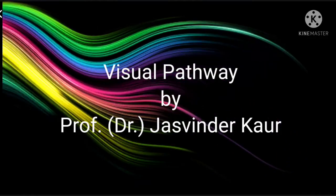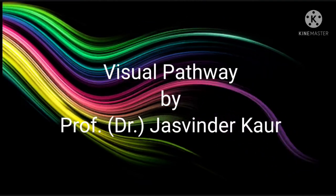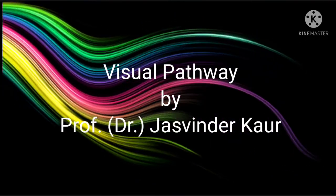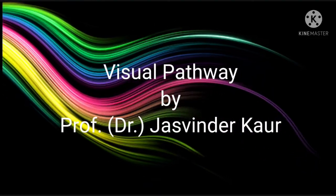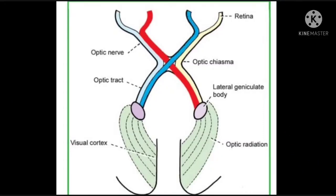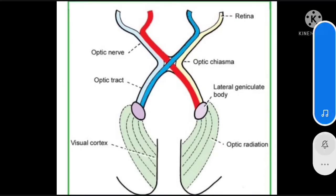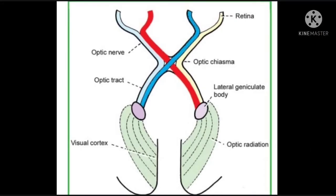Good morning dear students. Aaj hum 5 senses mein subse pehli vision ke visual pathway ki baat kareenge. Visual pathway — the system which identifies and categorizes visual objects is called the visual system and is a part of the central nervous system. Cornea and lens together refract the light to form a small image on the retina.